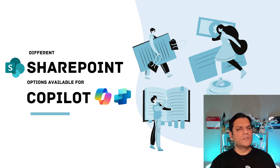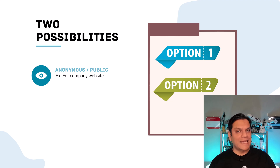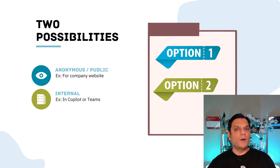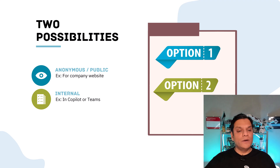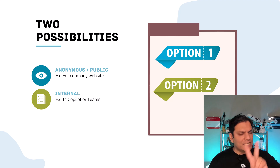When we start looking at the different SharePoint options available for Copilot Studio, the first question is: who is it going to be for? We are down to two possibilities. The first one is: is this agent for anonymous or public access, or is it internal? When I talk about anonymous or public, it literally means external — on your company's external or public-facing website, where everybody on the entire internet has access. If it is for internal only, people inside your company, whether you want to put it on your Copilot website or in Teams, that leads down another path.